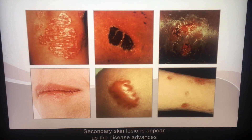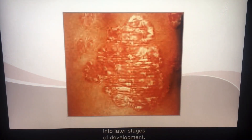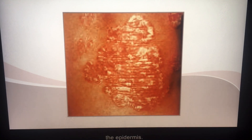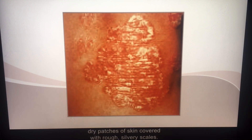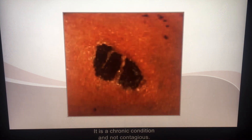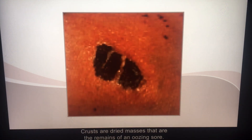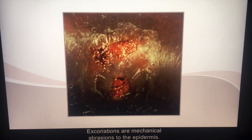Secondary skin lesions appear as the disease advances into later stages of development. Scales are shedding dead cells of the uppermost layer of the epidermis. Psoriasis is identified by round, dry patches of skin covered with rough, silvery scales; it is a chronic condition and not contagious. Crusts are dried masses that are the remains of an oozing sore — a scab on a sore is an example. Excoriations are mechanical abrasions to the epidermis; a scratch is an example.